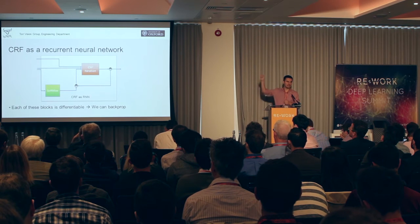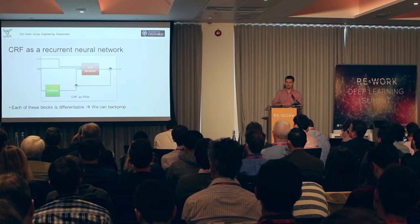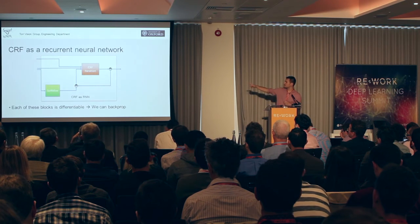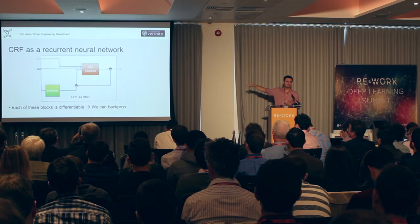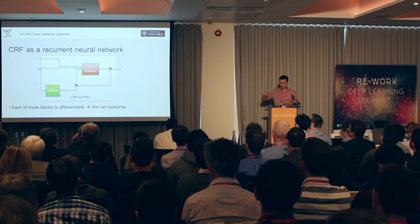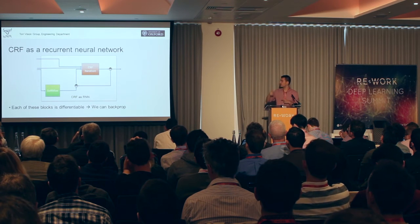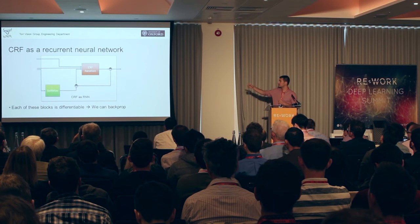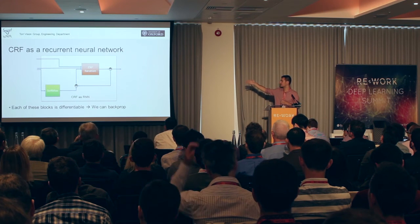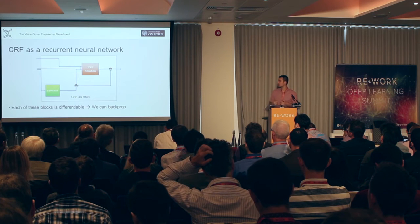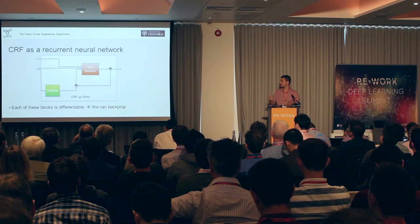We can implement the whole algorithm as follows: first the softmax is the initialization step before the loop, and then we repeatedly do the CRF iteration, iteratively finding the solution until convergence. Because of this loop, this unit is a recurrent unit. That's why we call this the conditional random field as a recurrent neural network.